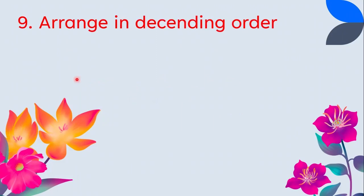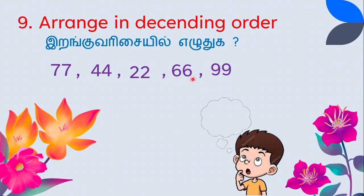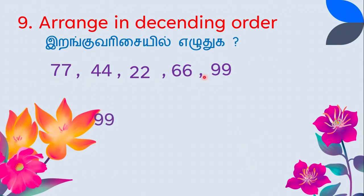Arrange in descending order: 77, 44, 22, 66, and 99. All tens digits are different. The highest tens digit gives 99 first, then 77, then 66, then 44, then 22. Descending order: 99, 77, 66, 44, 22.